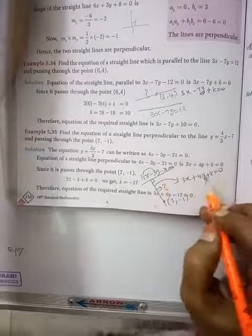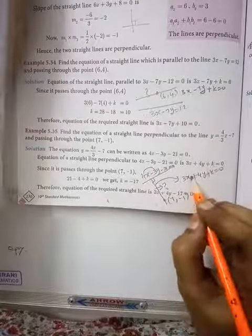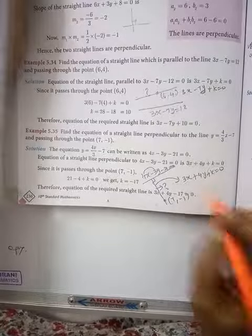Then add or k, calculate k, because it's passing through this point. Substitute x is 7, y is minus 1 to find out k.